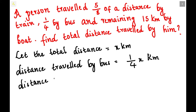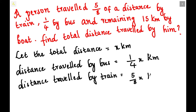The distance traveled by train will be 5/8 x kilometers. He traveled 5/8 of his total distance by train, so multiplying by x gives the actual kilometers. Now we are going to find his total distance — let us solve it on the next page.